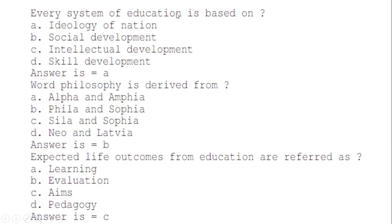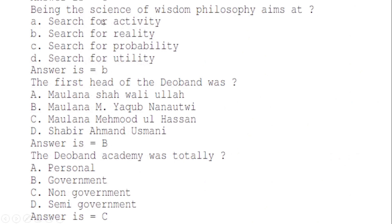Every system of education is based on: correct option A — ideology of the nation. The word philosophy is derived from: correct option B — 'philo' and 'sophia.' Expected life outcomes from education are referred to as: correct option C — aims. Being the science of wisdom, philosophy aims at: correct option B — search for reality.